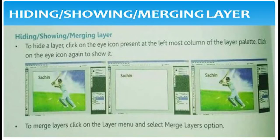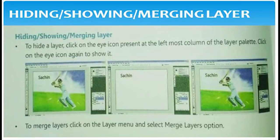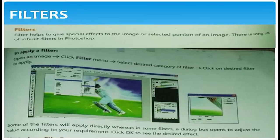To hide a layer, click on the eye icon in the leftmost column in the layer palette. Click the eye icon again to show it — we can hide and unhide the layers. To merge the layers, click on the layer menu and select merge layers option. Merging means making two or three layers into one — that is called merging.